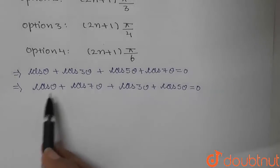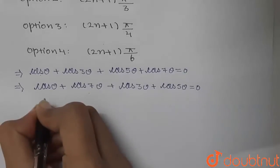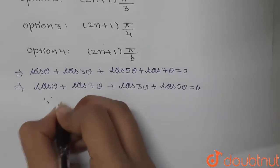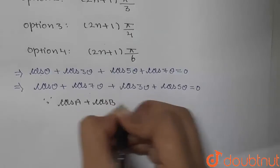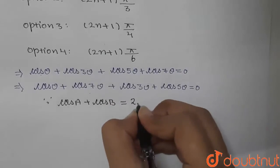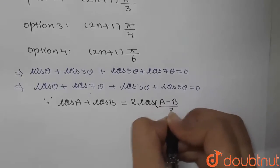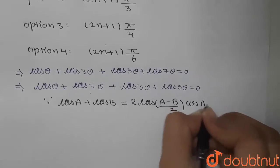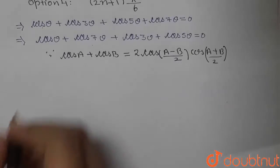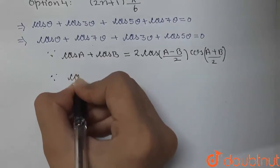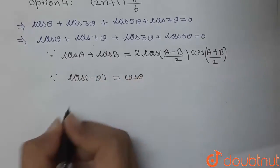As we can see, this resembles the identity for cos A + cos B. We are going to use that identity. The identity is: cos A + cos B = 2·cos((A−B)/2)·cos((A+B)/2). We will also use the identity that cos(−θ) = cos θ.